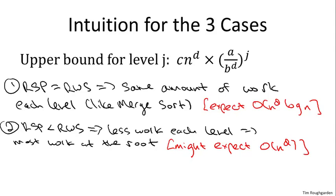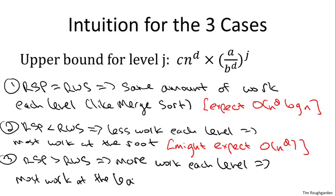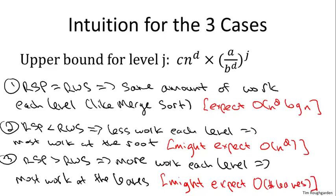By the same reasoning, when subproblems proliferate so rapidly that they outpace savings per subproblem, the amount of work is increasing with recursion level, and the worst case is at the leaves. If you keep your fingers crossed and hope the simplest outcome holds — that the leaves dominate the running time up to a constant factor — then, since we do a constant amount of work per leaf (those correspond to base cases), we'd expect a running time proportional to the number of leaves in the recursion tree.